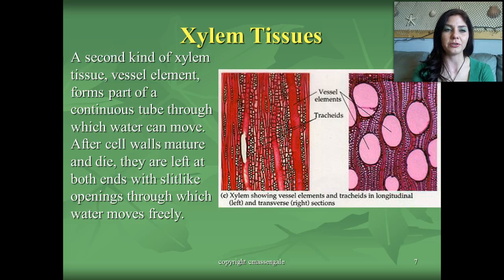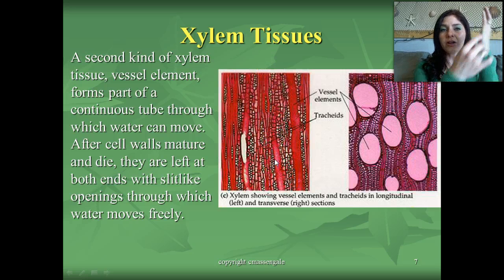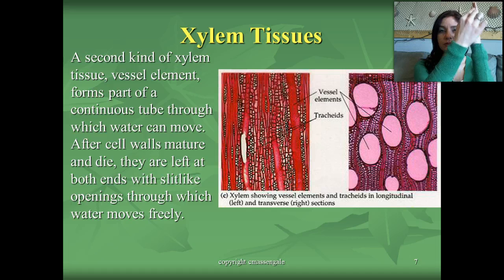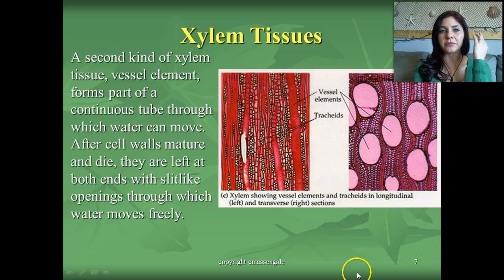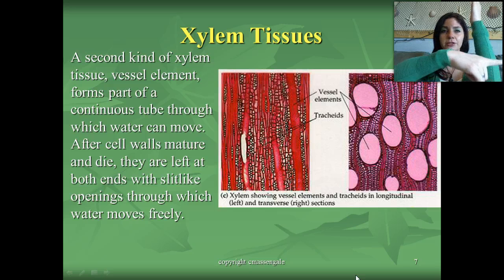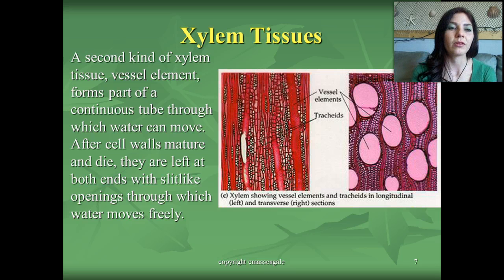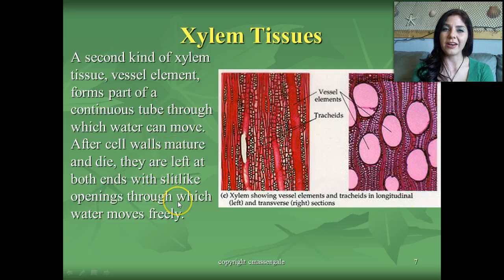The second type of xylem tissue is called a vessel element. In a longitudinal section — meaning a long cut, like filleting open along the length — versus a transverse or cross section, which is like cutting straight through to see the inside. The vessel element forms part of a continuous tube through which water can move. After the cells mature and die, they are left at both ends with slit-like openings through which water moves freely.